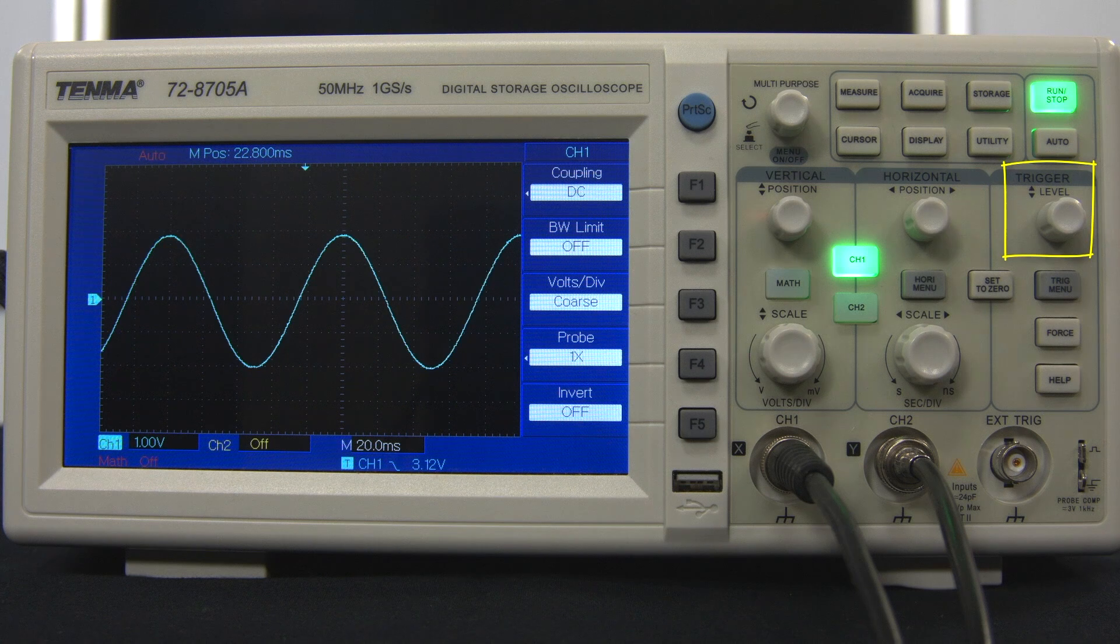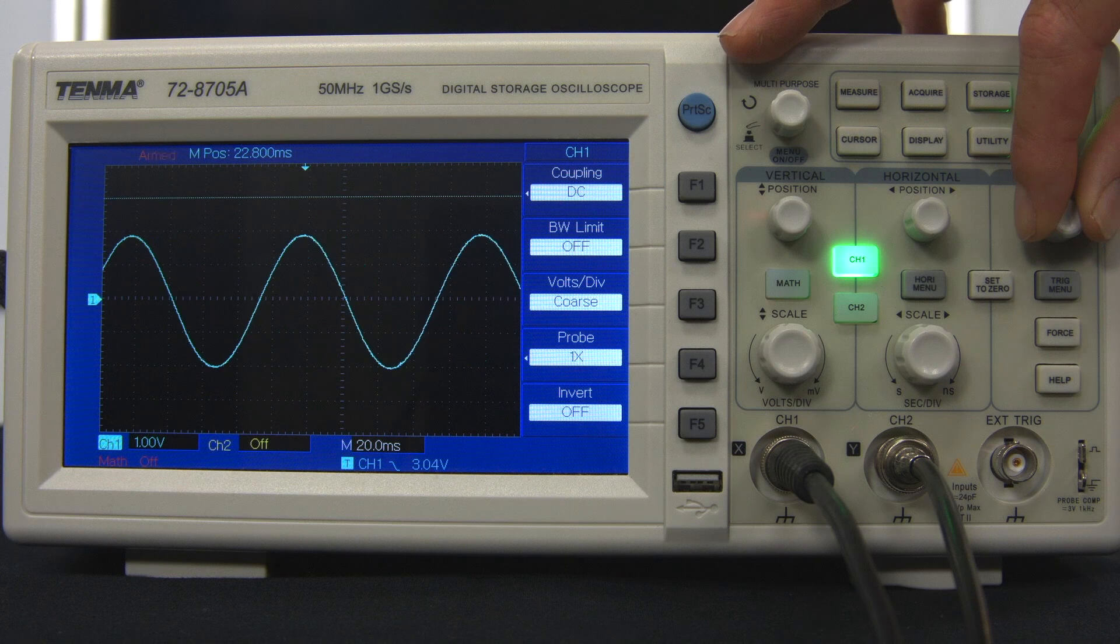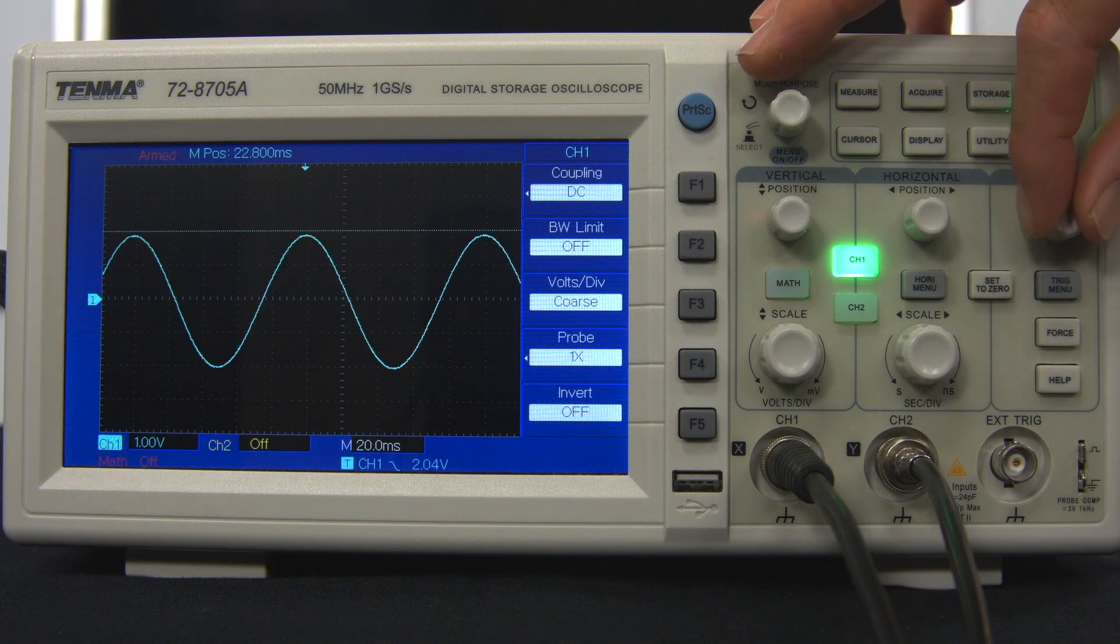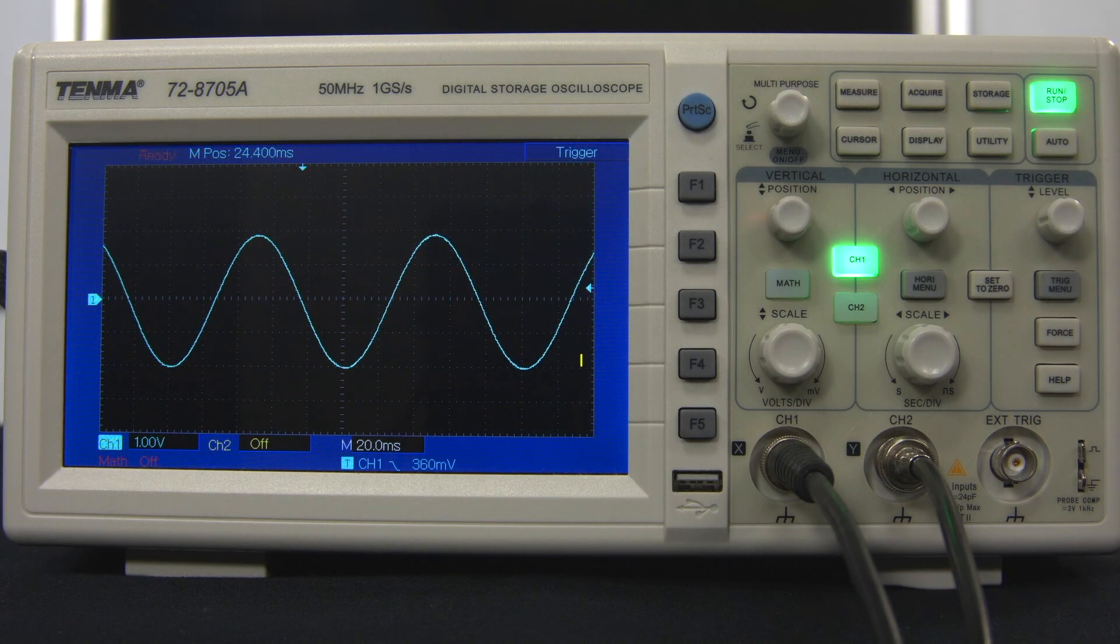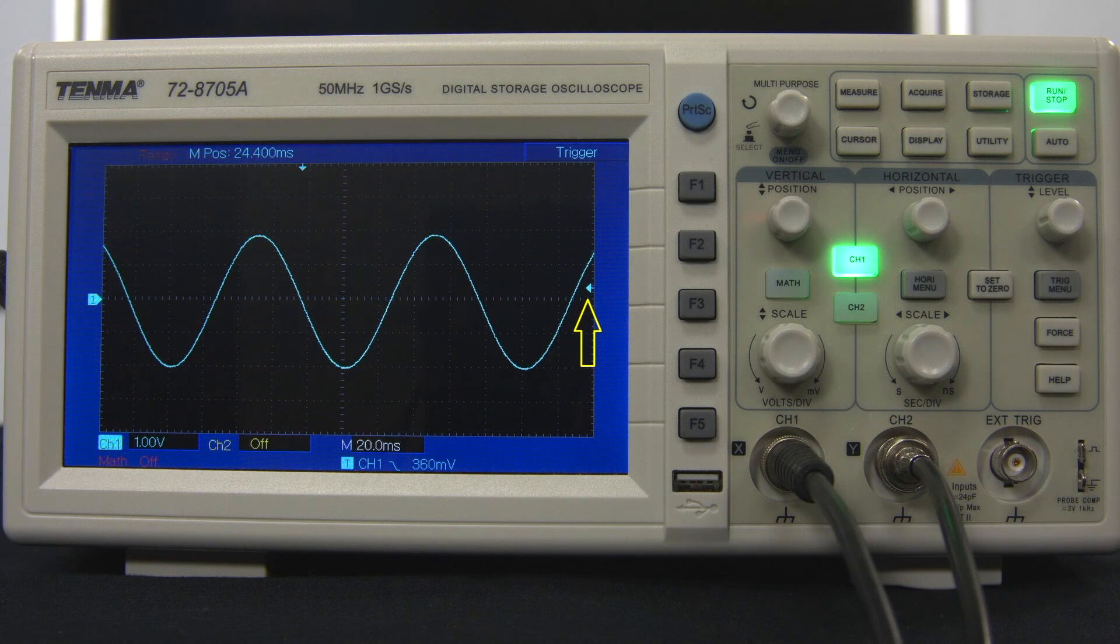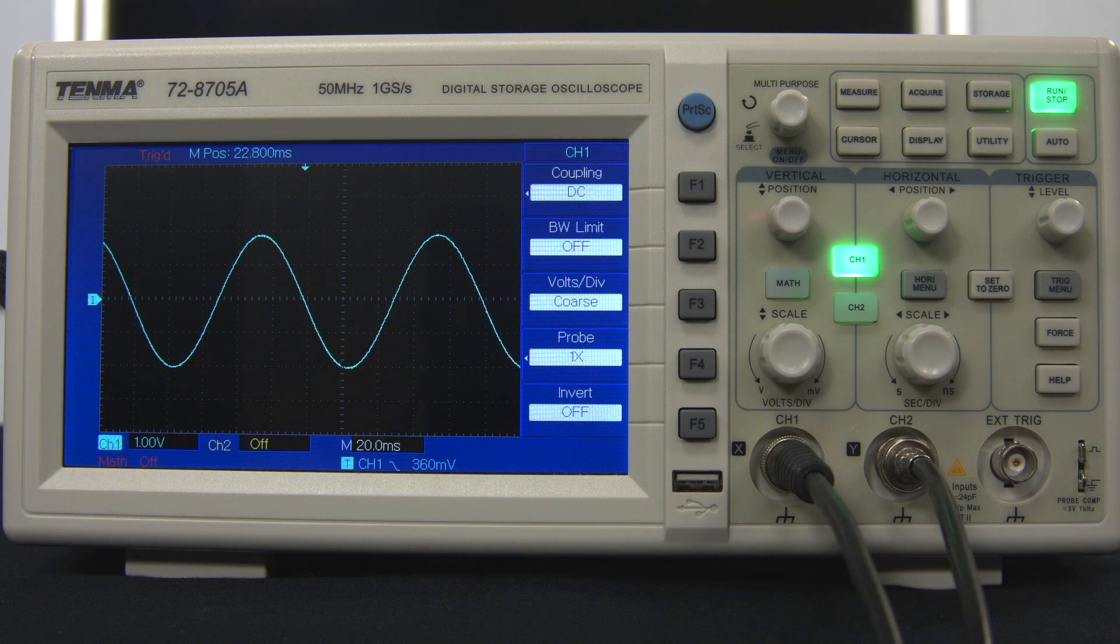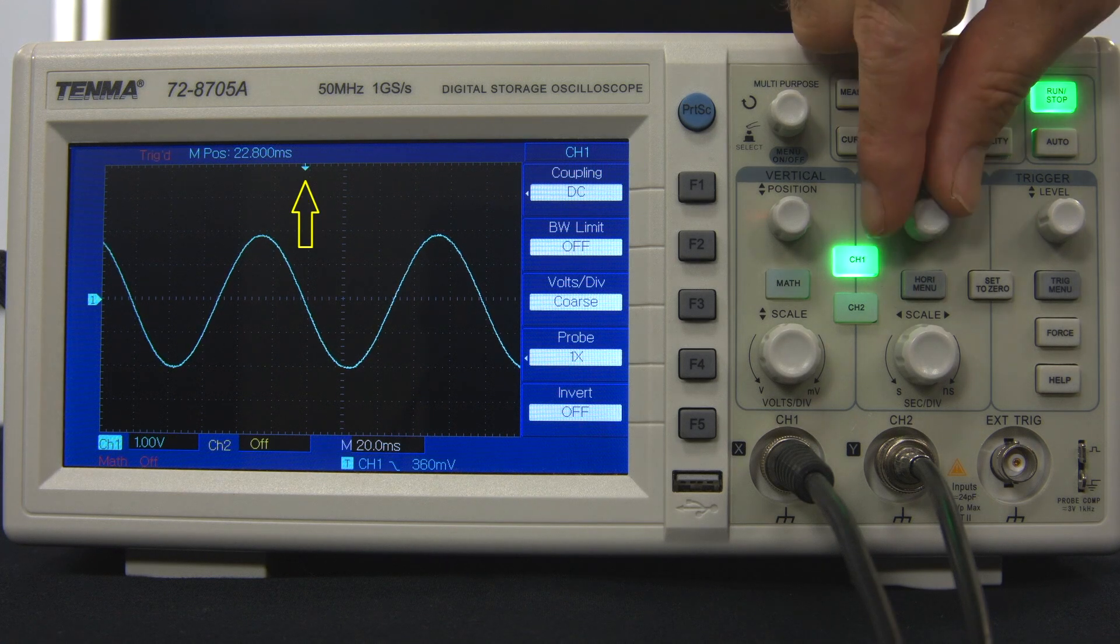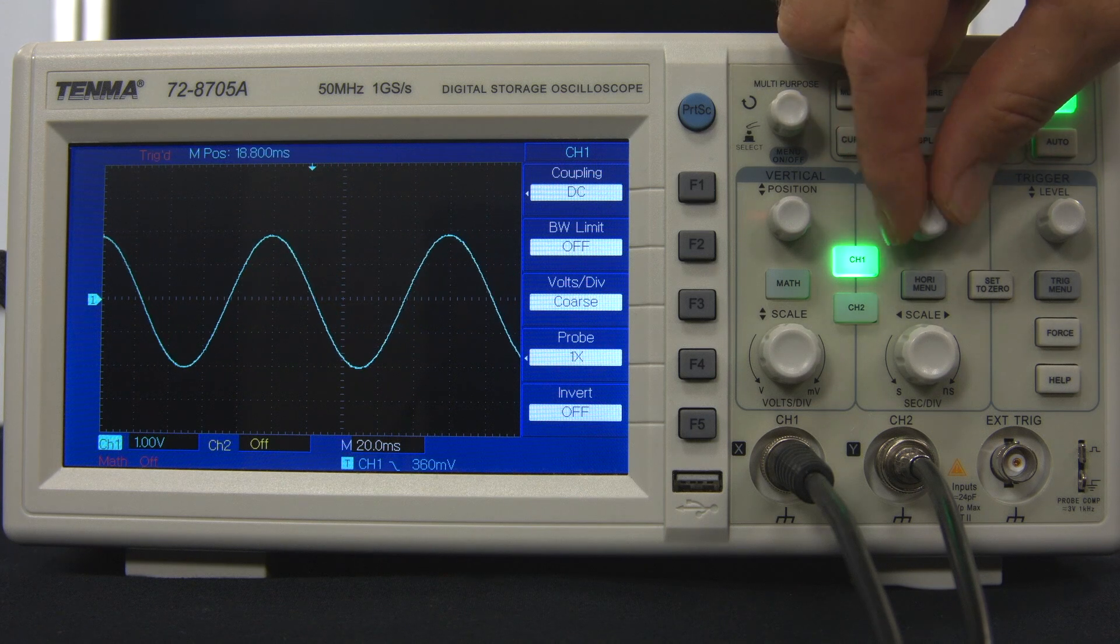The trigger level control changes this voltage setting, and as the knob is turned, a dotted horizontal line shows the trigger voltage value. Once the trigger level matches some part of the signal, the display becomes stable. The trigger level is indicated by the small arrow on the right side of the screen. The trigger point for updating the display also has a location along the horizontal time axis. This is indicated by the small arrow at the top of the screen. When the horizontal position is adjusted, it is this trigger location that moves left or right.